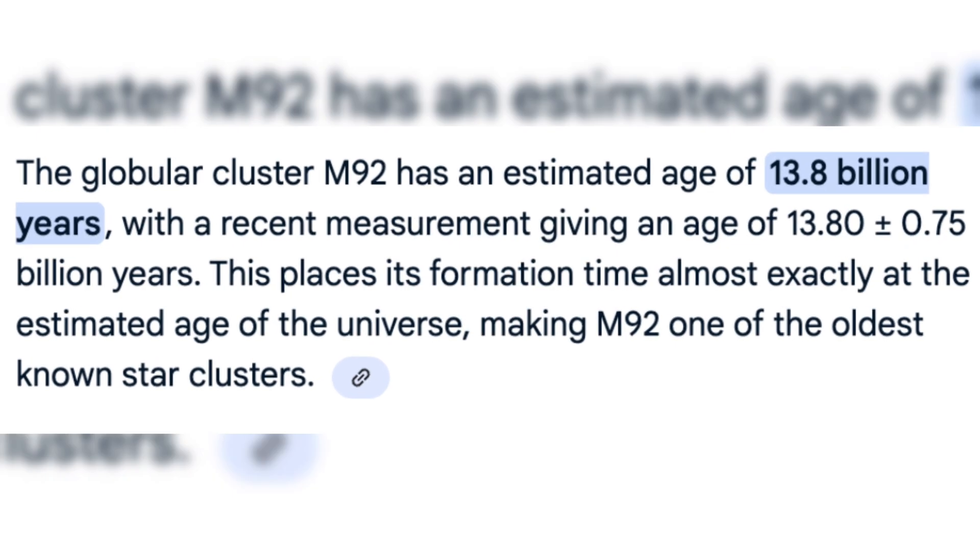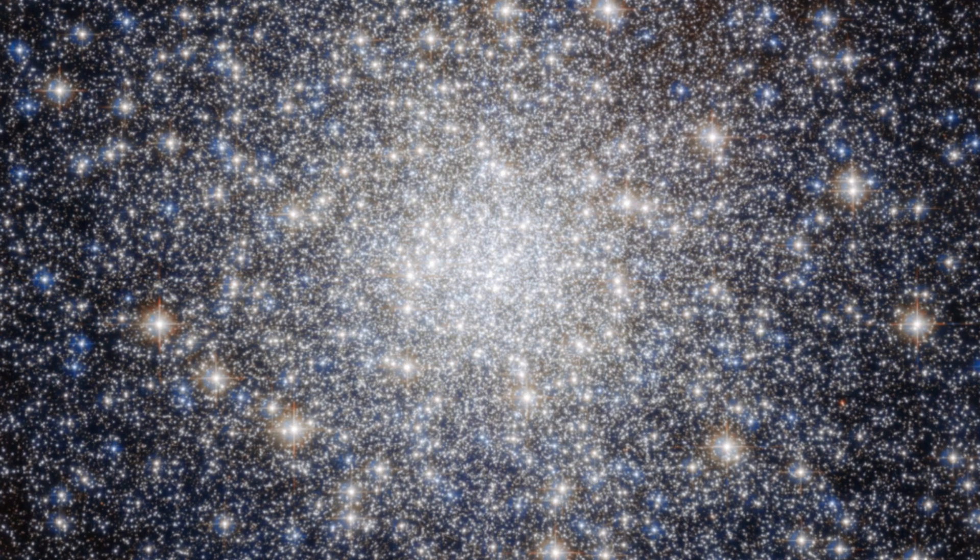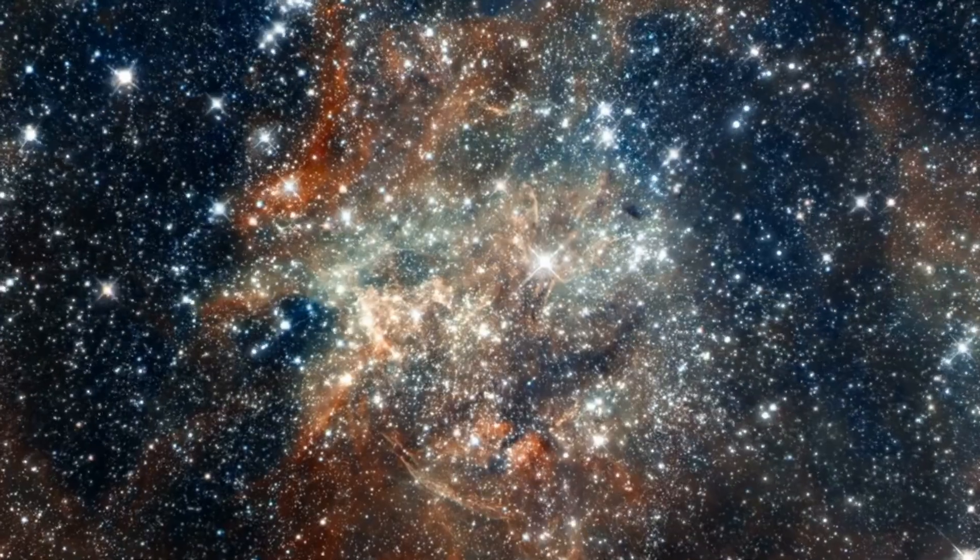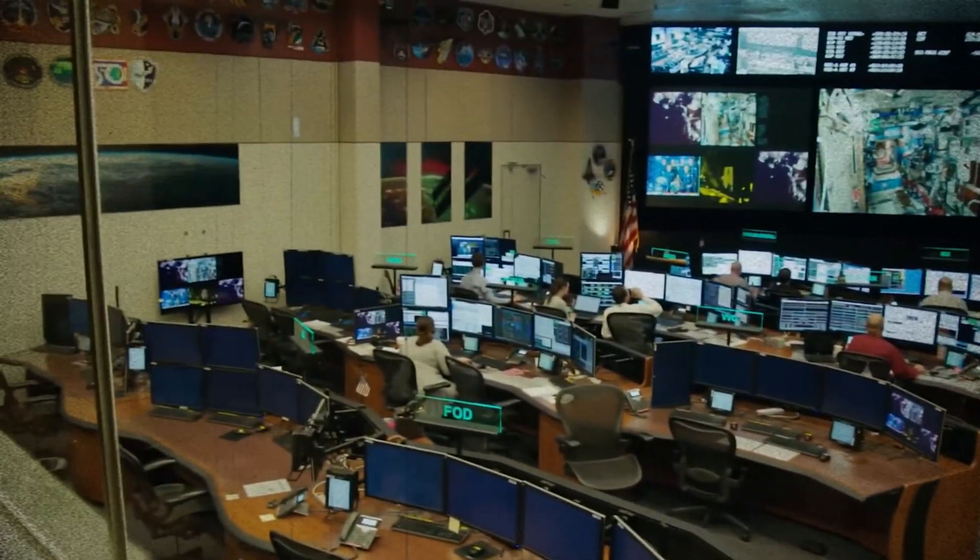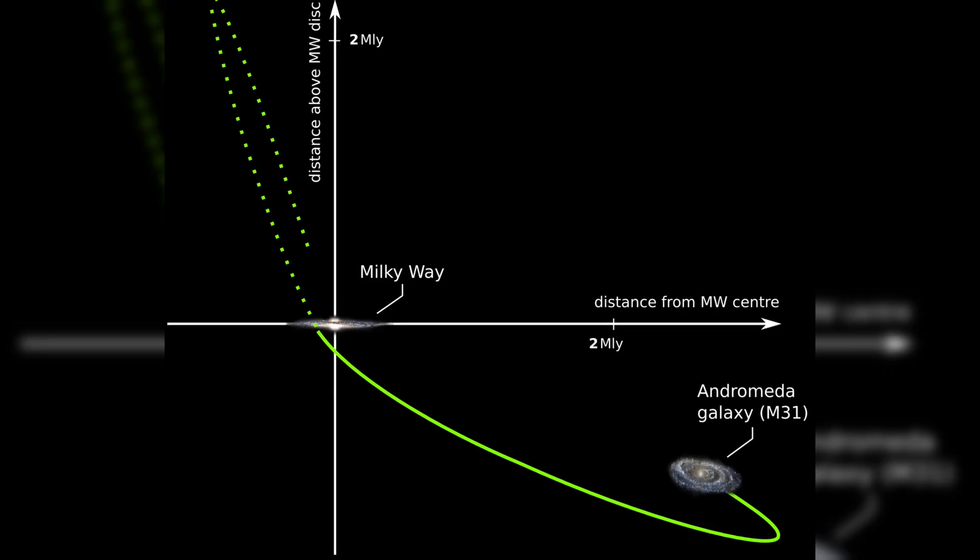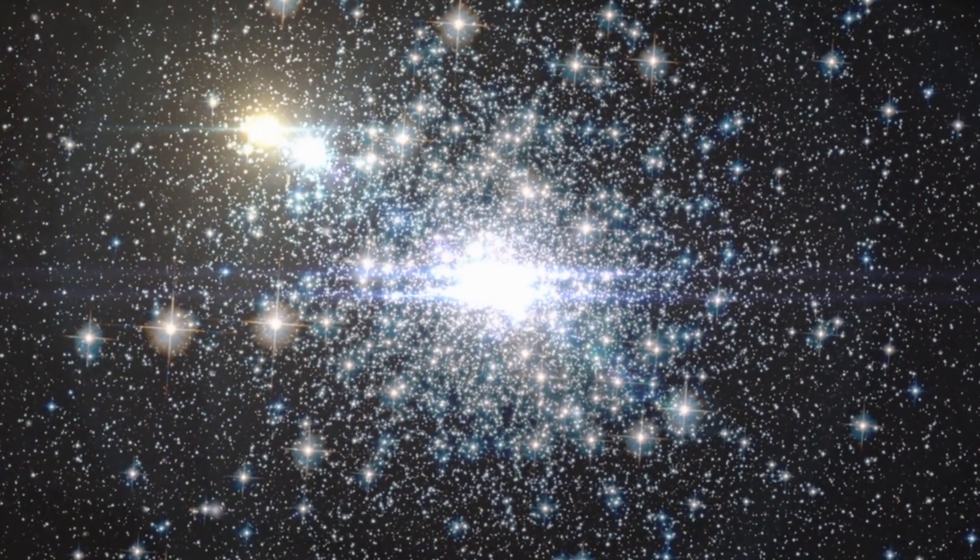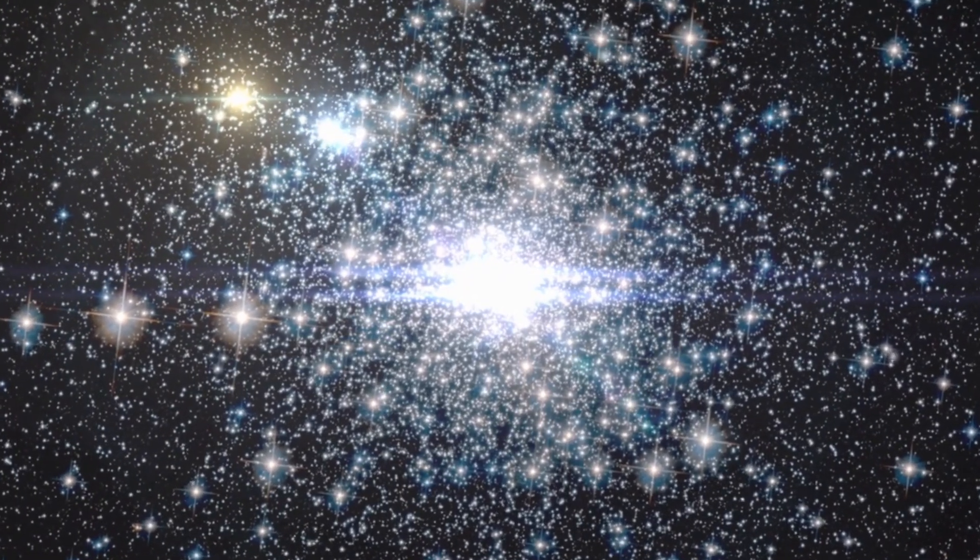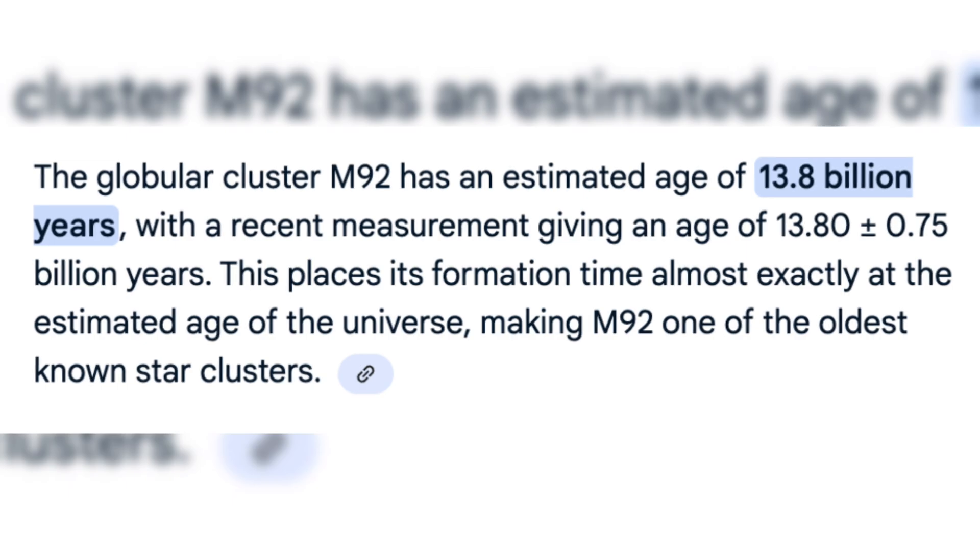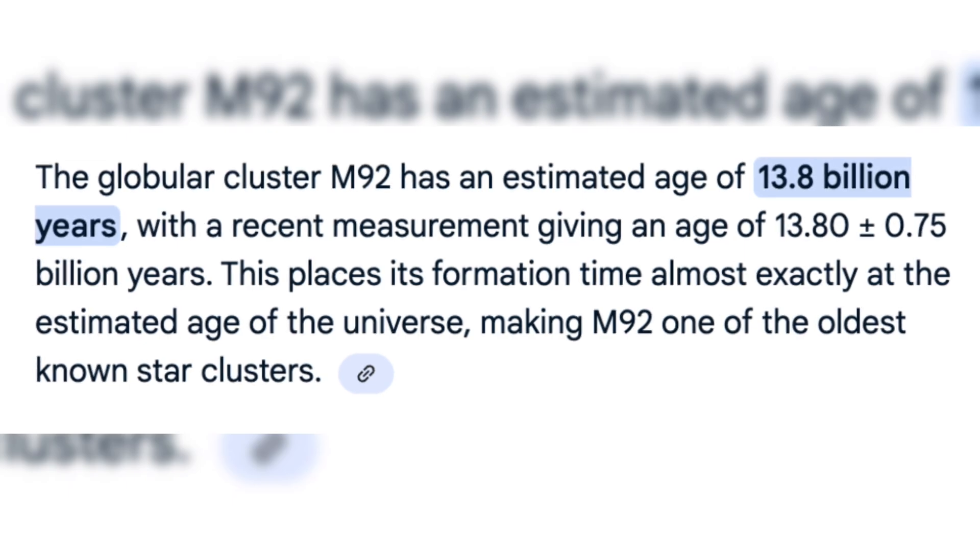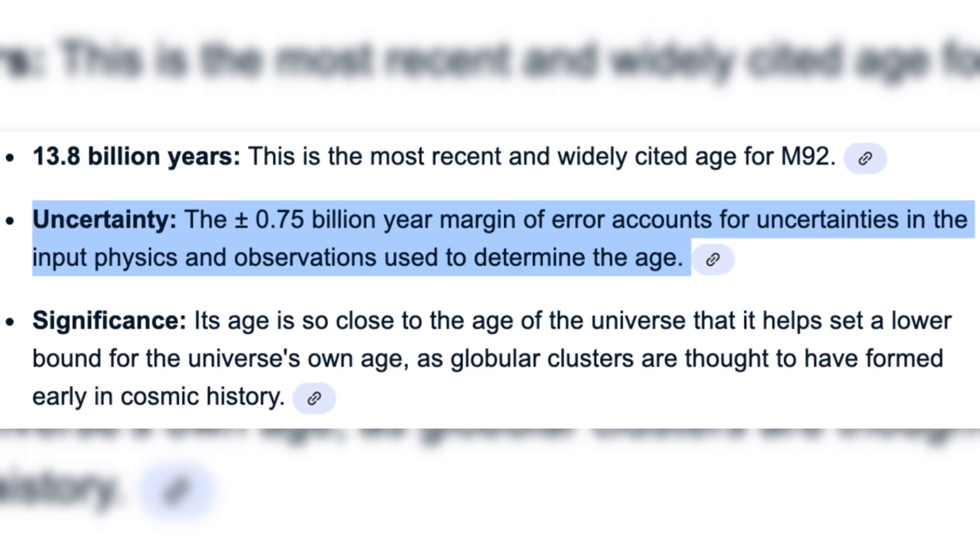Although M92's age had been measured before, earlier estimates relied on a single synthetic star set. By analyzing thousands of synthetic populations, the researchers greatly minimized the uncertainty tied to assumptions inherent in each model. This innovative technique led to a 50% decrease in the uncertainty regarding the cluster's age. The team concluded that M92 is around 13.8 billion years old, with an error margin of about 750 million years.